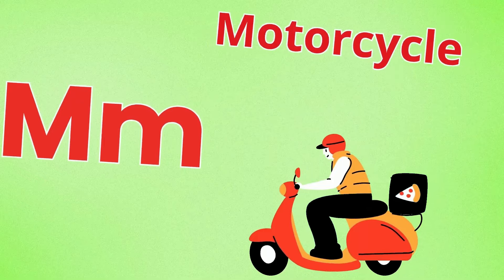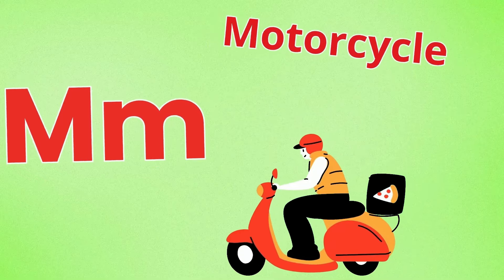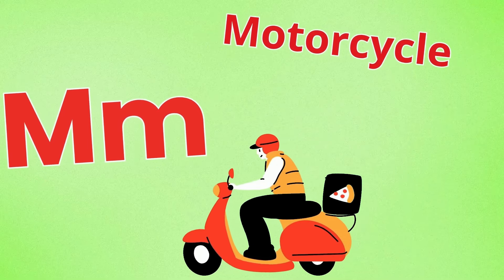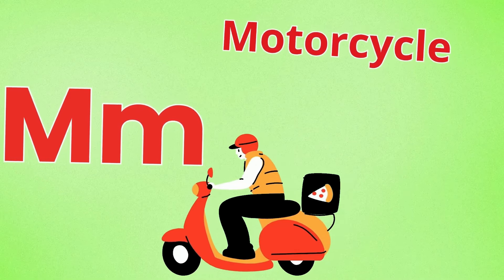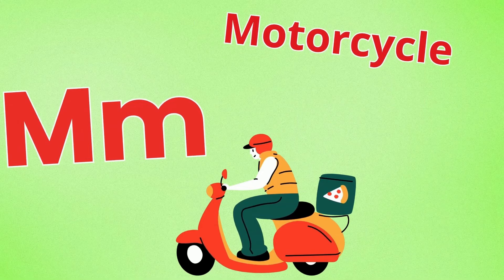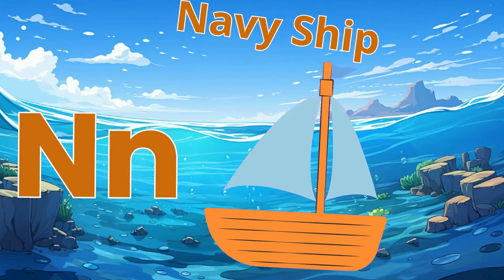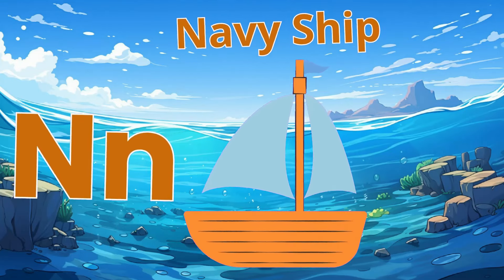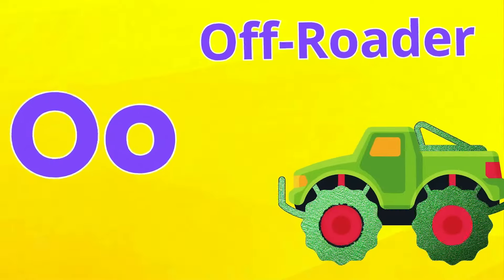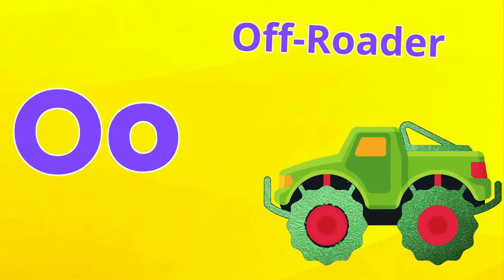M is for motorcycle, M-M motorcycle, vrooming down the road, zoom-zoom, motorcycle. N is for navy ship, N-N navy ship, sailing through the sea, horn blows, navy ship.